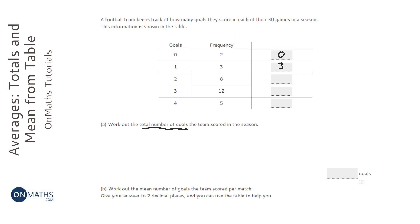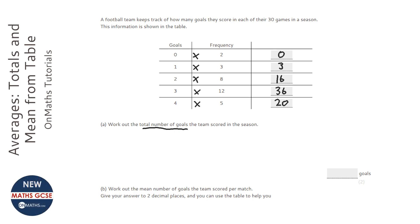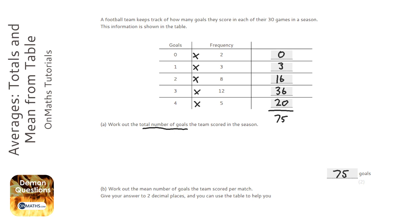In eight of the matches they scored two goals, so that's 16 in total — all I'm doing is multiplying these two together. 12 matches with three goals, so that's 36. And in five matches there were four goals, so that's 20 goals in total. Now in total we're going to add those together: 3 plus 16 plus 36 plus 20, which is 75.